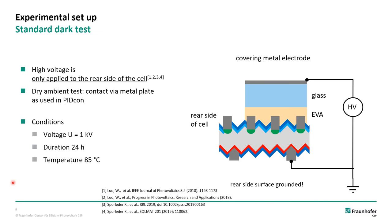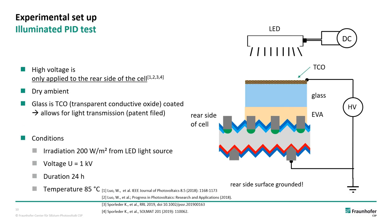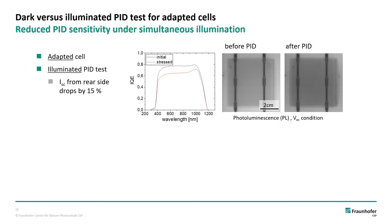This is the setup we use for our standard PID tests in the dark. We locally apply an EVA and glass, and note that the rear side of the solar cell is tested in this orientation. The high voltage is applied between a contact on top and a contact at the bottom. This is the setup used in the PIDcon. To realize simultaneous illumination, we adapted the setup and now use glasses coated with transparent conductive oxides. This allows light to enter the cell while a high voltage is applied.